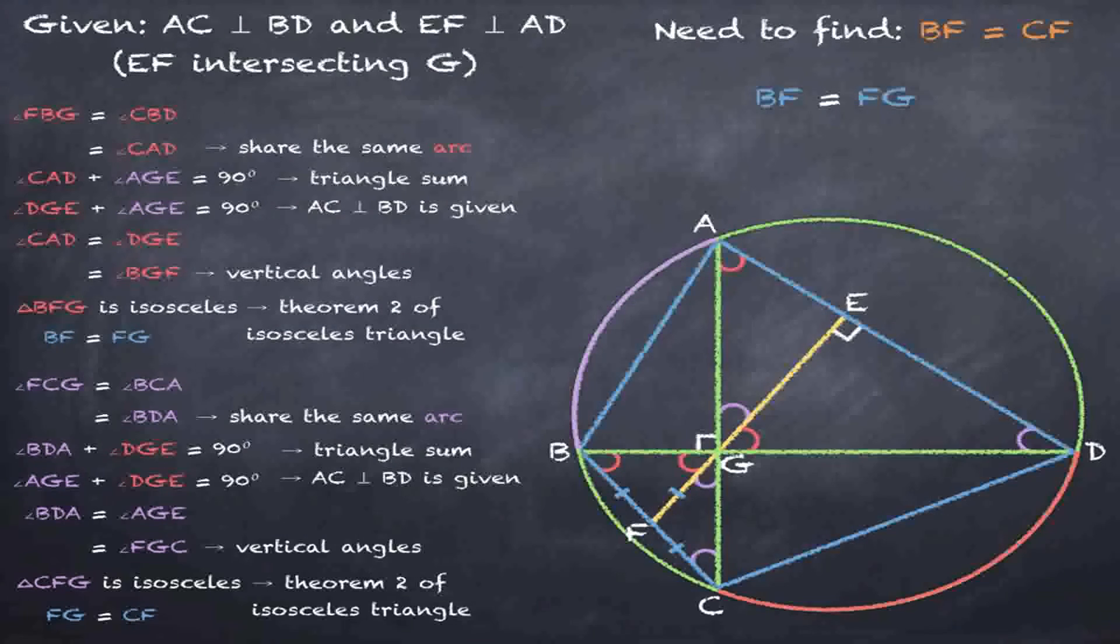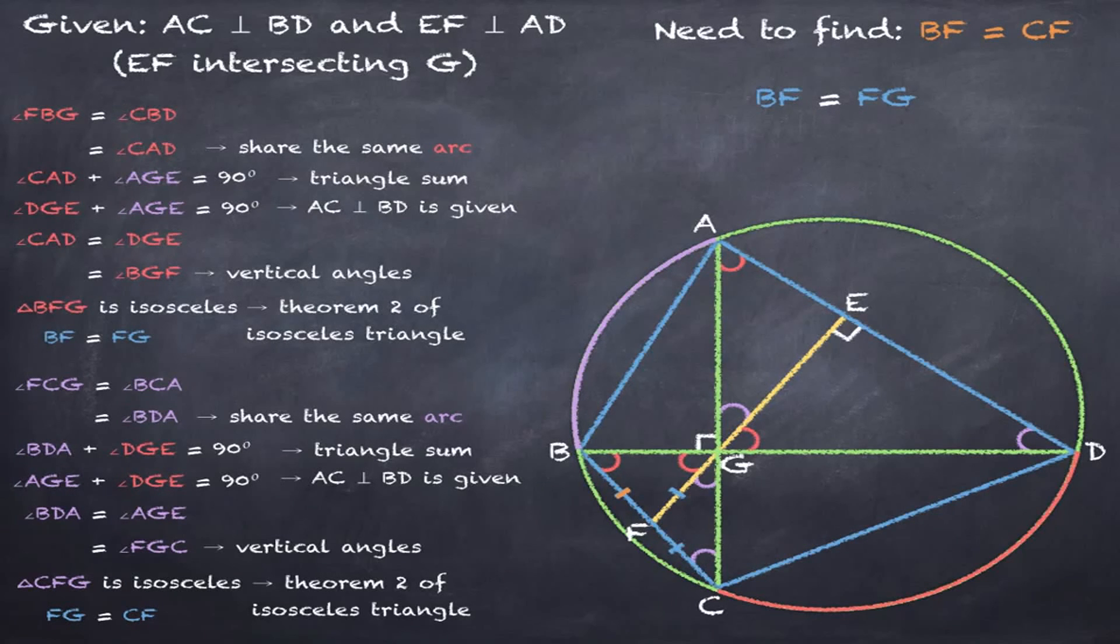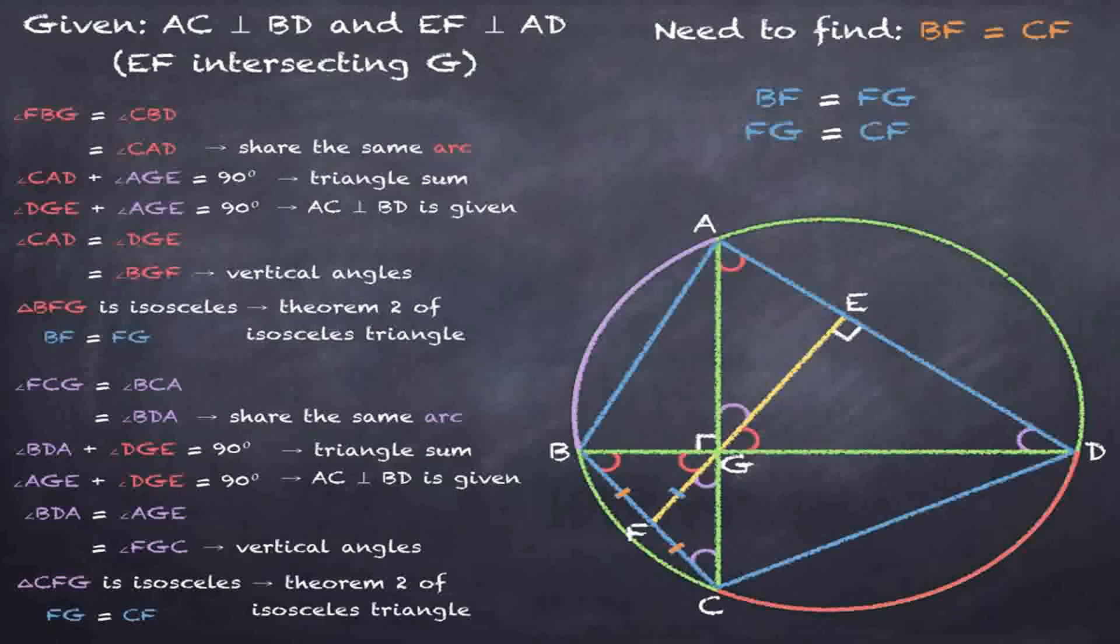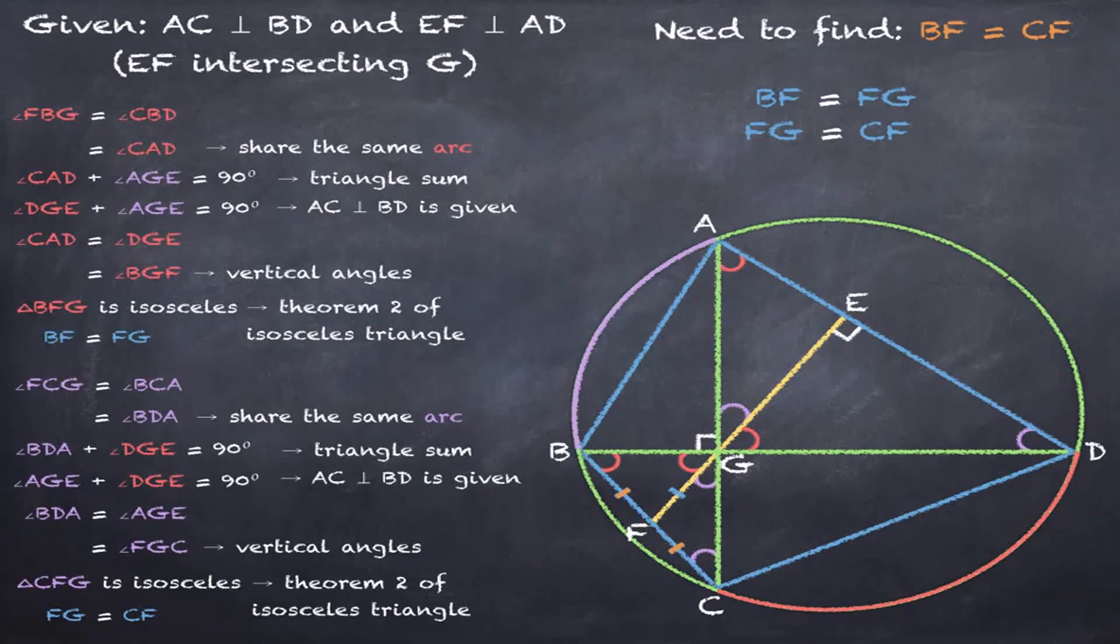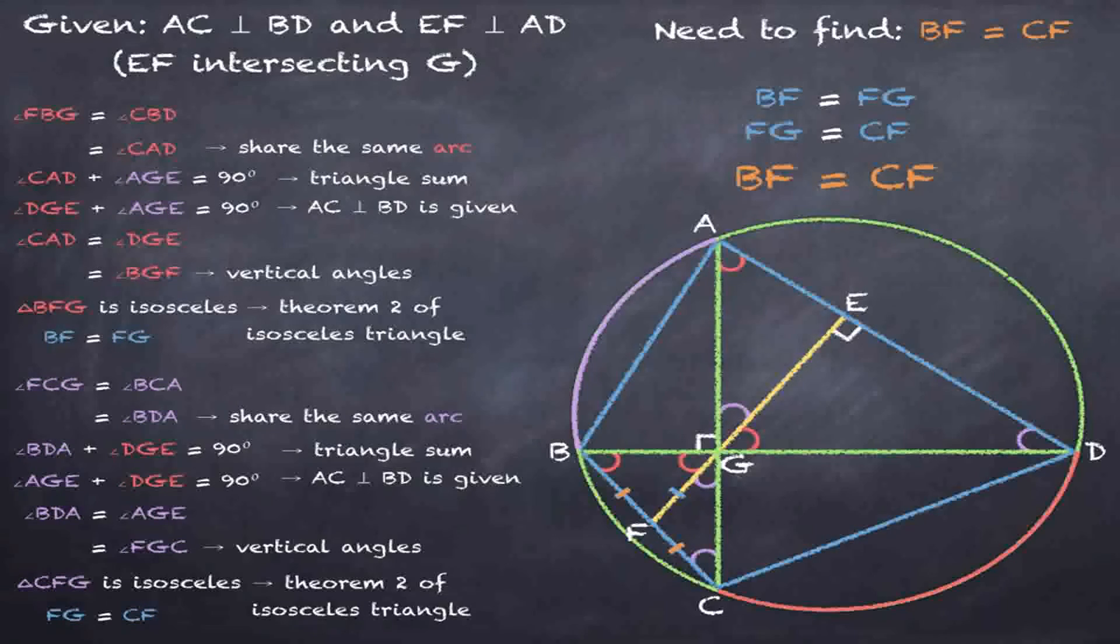And by looking at our results, we see that line BF equals line FG and line FG equals line CF. Therefore, line BF equals line CF, proving the Brahmagupta theorem.